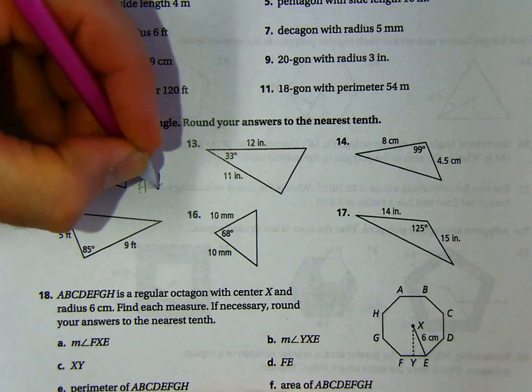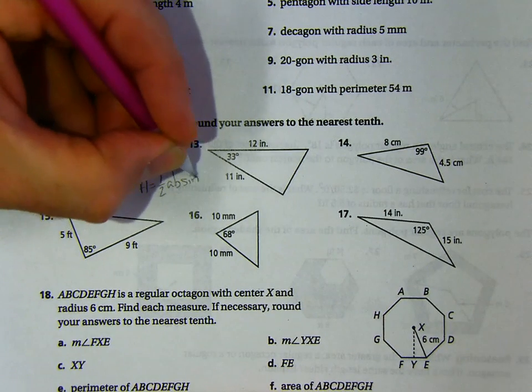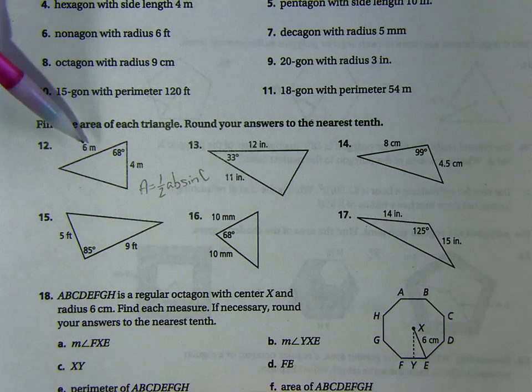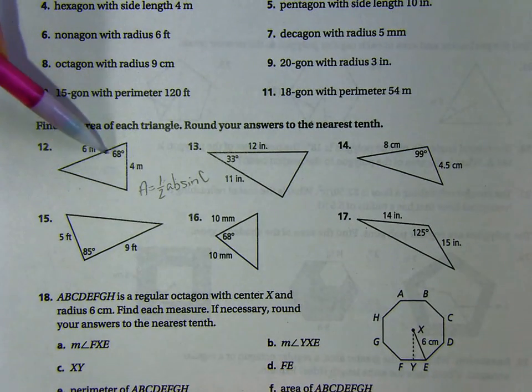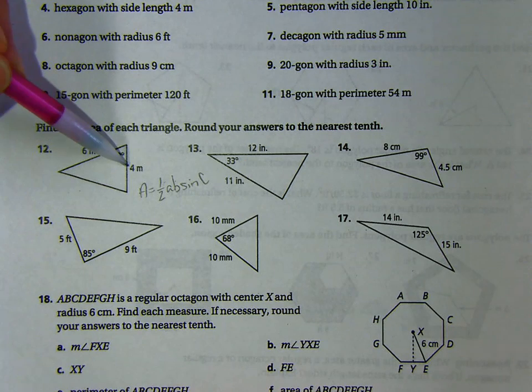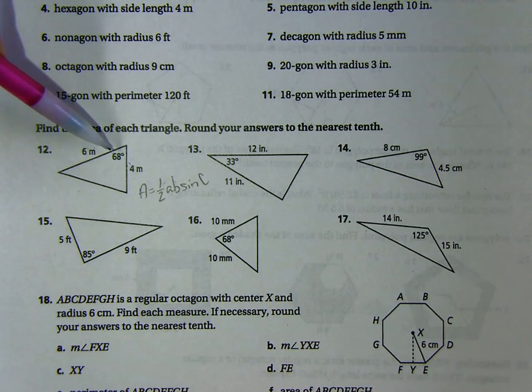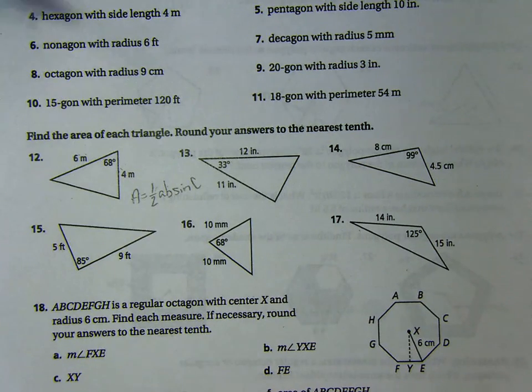The area is equal to 1 half A, B, sine C, or whatever it happens to be. These are the two sides, A and B, and this is the angle in between. You could have called it B, C, sine A. It would not matter. It's these two sides and the side of that angle. And so that's how you solve those.